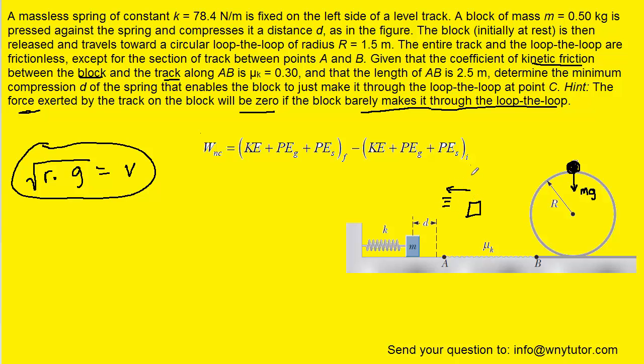there is a kinetic frictional force acting on it that we can denote as F sub K. The displacement of the block is in this direction. The block is traveling to the right, so if you note from this picture, the angle between the displacement and Fk would be 180 degrees.